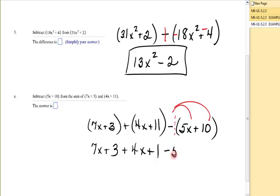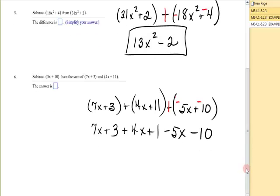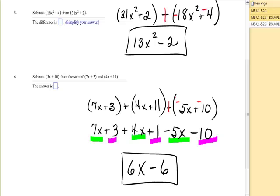So that's going to become -5x and -10. Keep all this, change, change. There's my negative, there's my negative. Now, like terms. I have 7x and 4x and -5x. 7 and 4 gives me 11, and 11 - 5 is 6x. Then I have 3 + 1 is 4, minus 10 is -6. I end up with 6x - 6. That's adding and subtracting polynomials by adding and subtracting like terms.